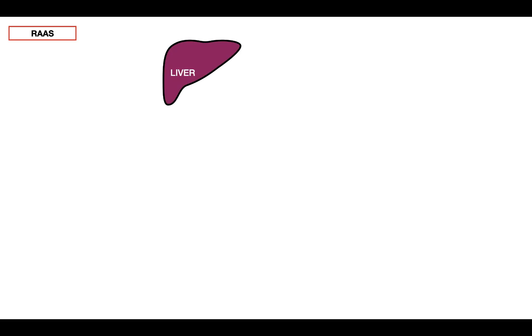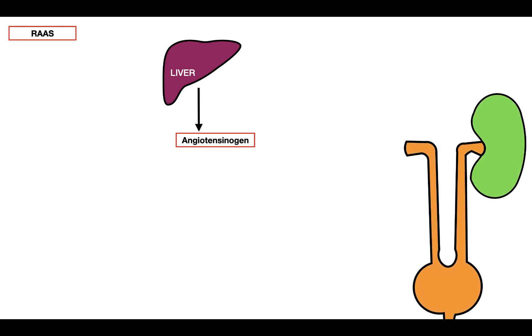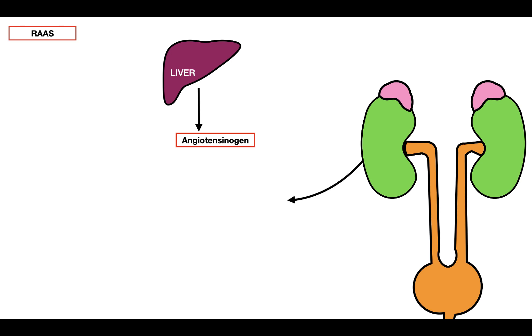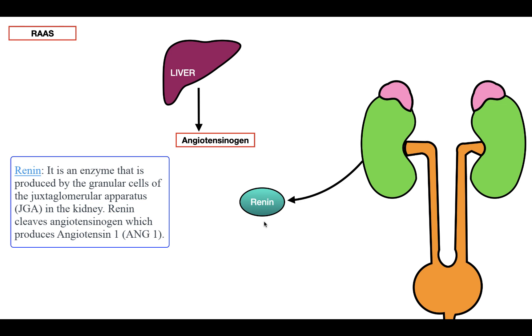Before we talk about how angiotensin 2 affects aldosterone secretion, it's important to understand the renin-angiotensin-aldosterone system. This system starts off with the liver, which is responsible for synthesizing and producing angiotensinogen. Angiotensinogen is a precursor protein that needs to encounter an enzyme synthesized and released from the kidneys — this enzyme is called renin. Renin is synthesized by the granular cells in the juxtaglomerular apparatus and catalyzes the conversion of angiotensinogen into angiotensin 1.